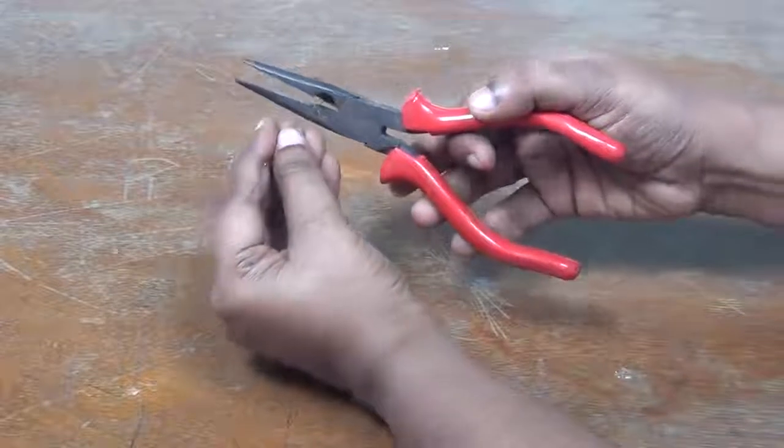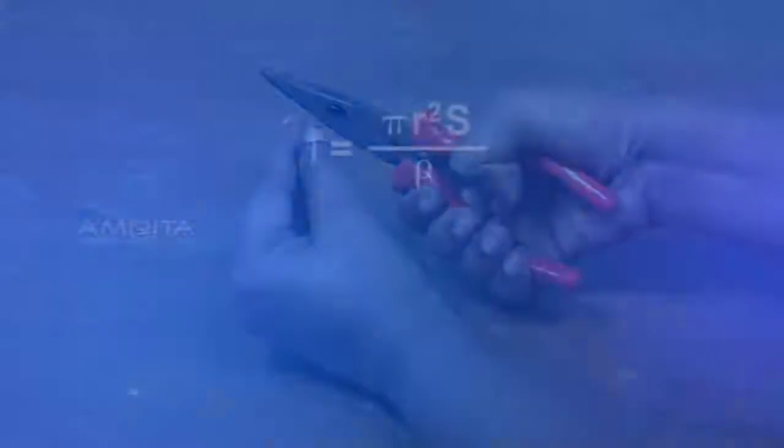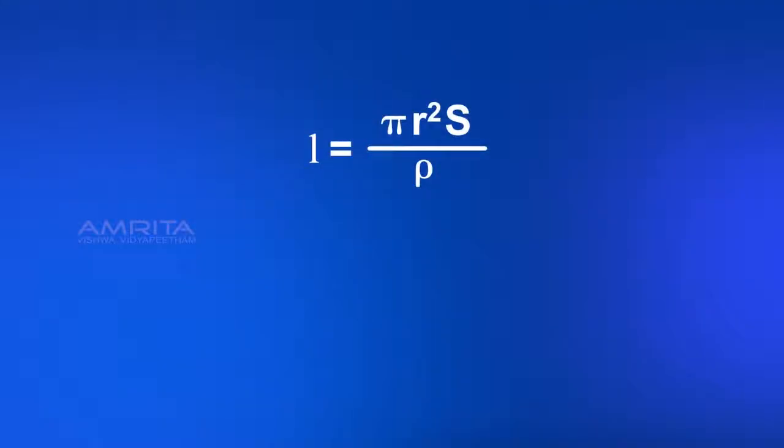Then the length of the wire required for shunt can be calculated using the formula L equals pi R squared S divided by rho,